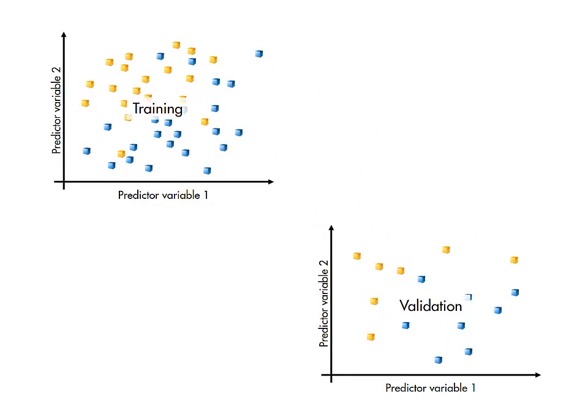This works well when you have enough data that the validation set is likely to be a good statistical representation of the whole data set. But if not, the test results can depend heavily on how the data happen to be divided.